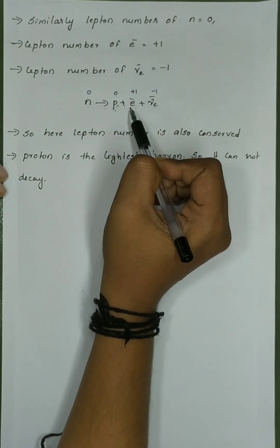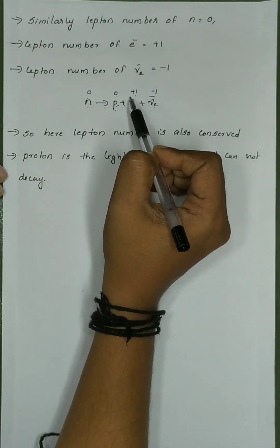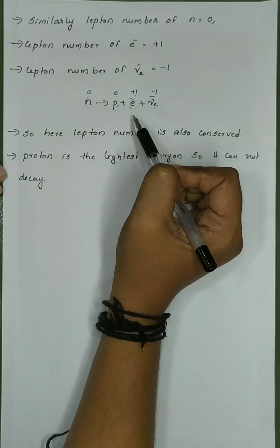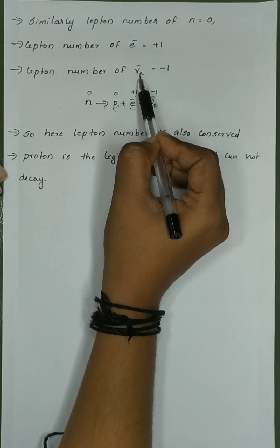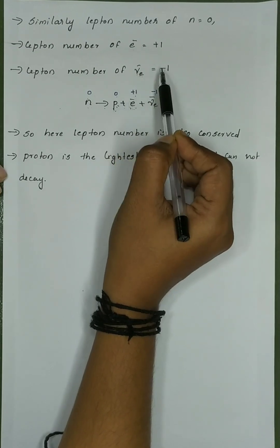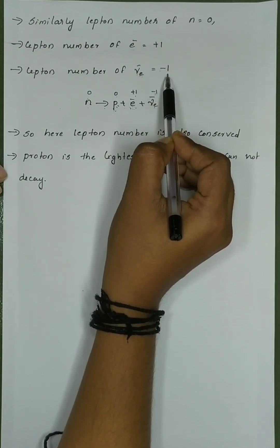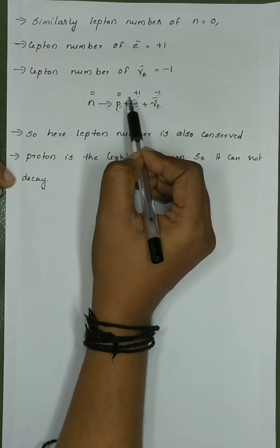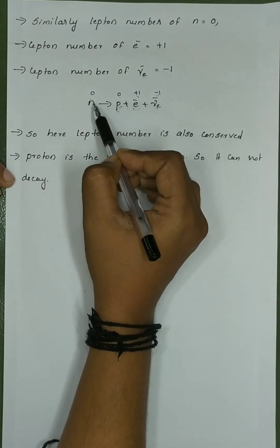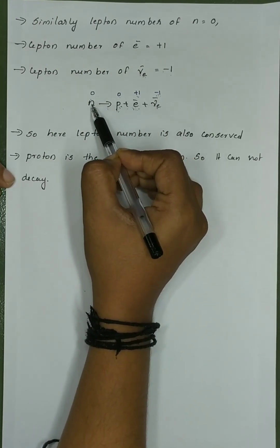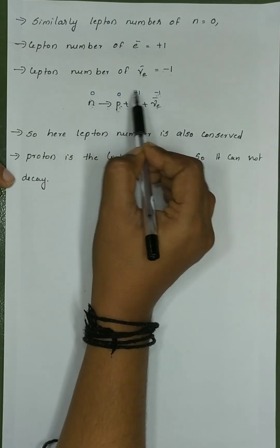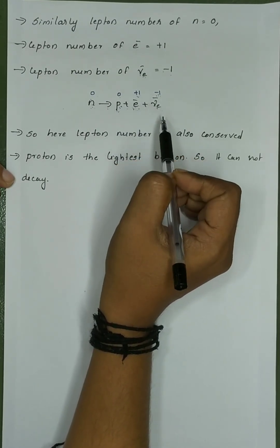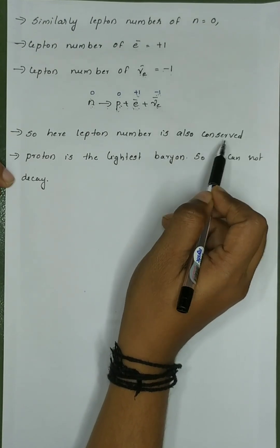The Lepton number of the electron is plus 1. The anti-electron neutrino is an antiparticle, so its Lepton number is minus 1. Therefore, on the right side we have plus 1 and minus 1, giving L_e equal to 0. Since the neutron's Lepton number before decay is also 0, the Lepton number is conserved before and after decay.